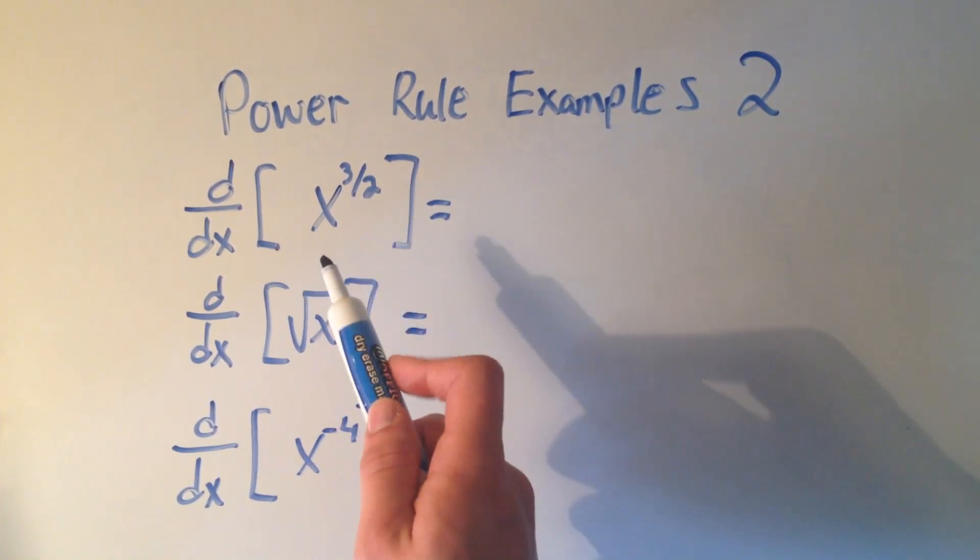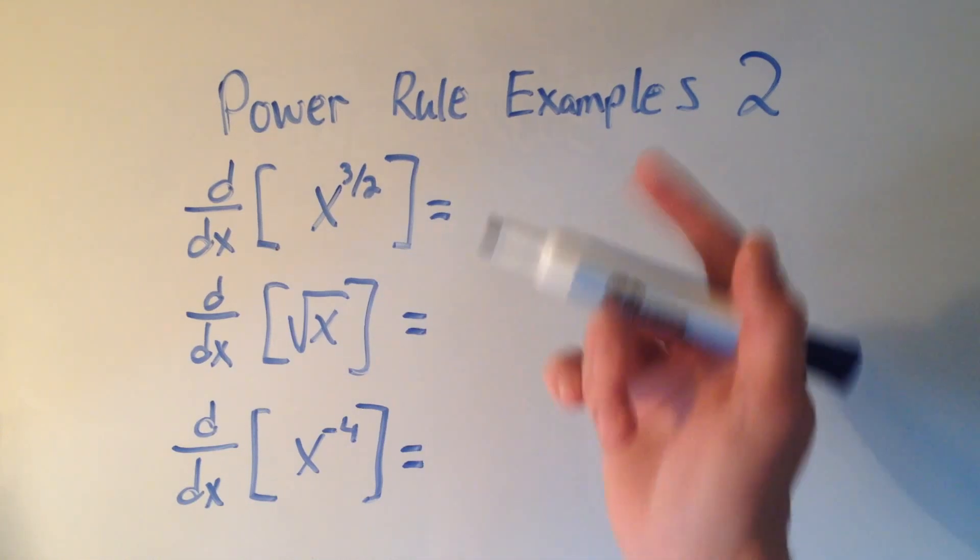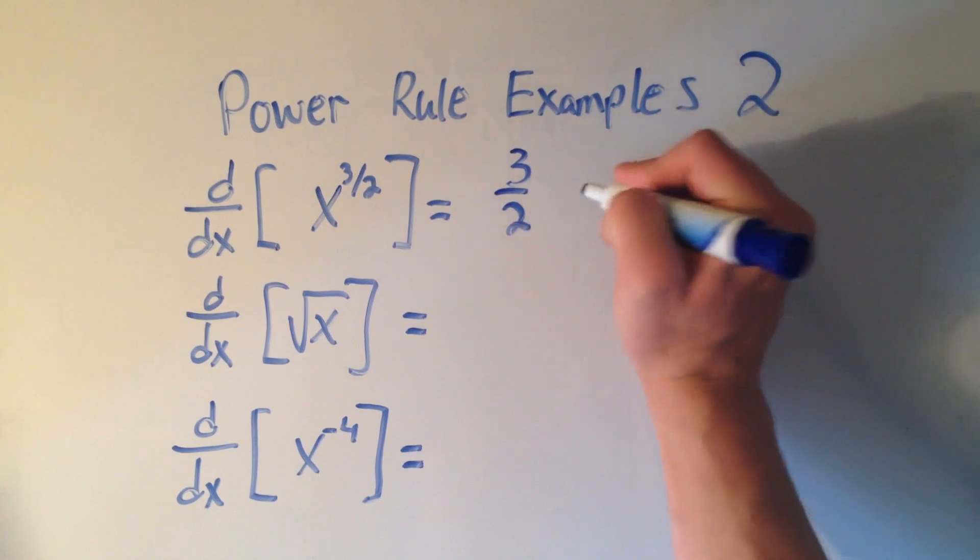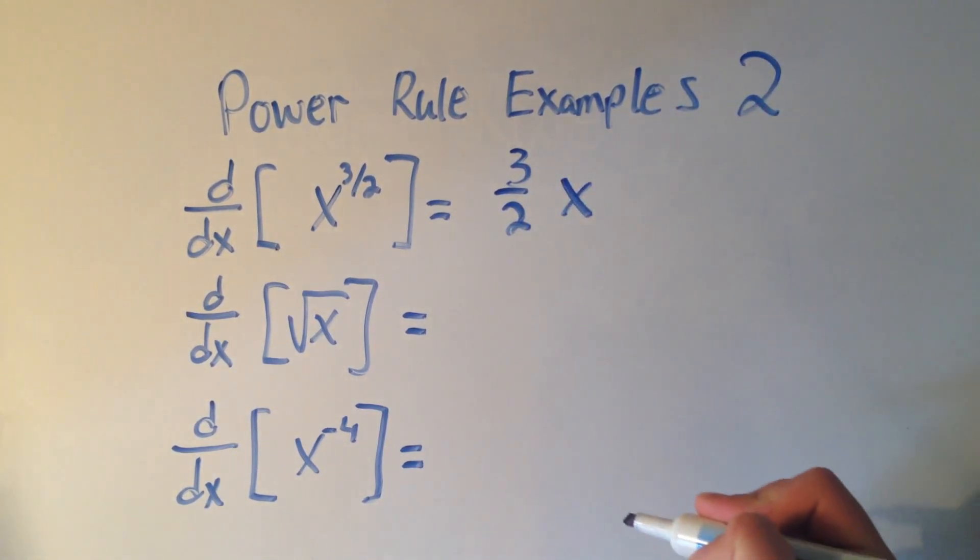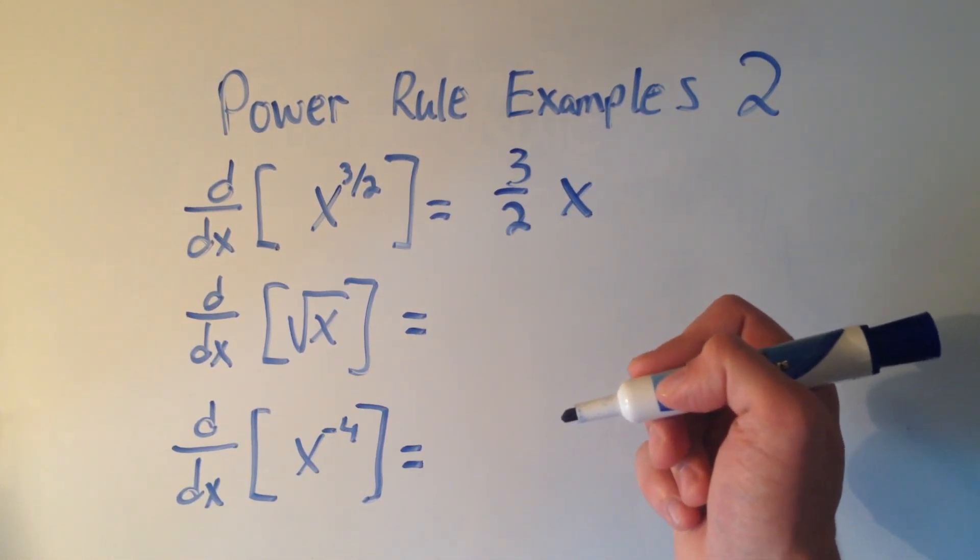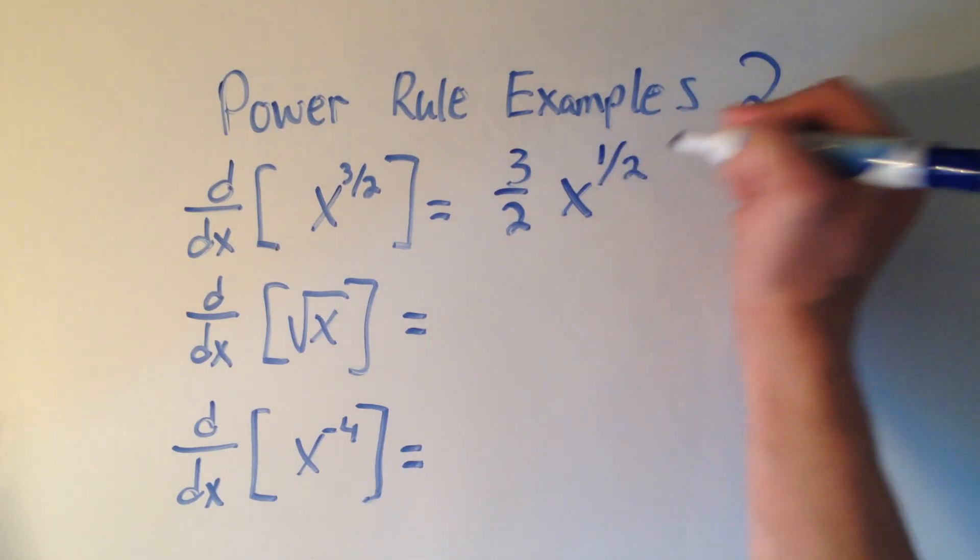So if I want to take the derivative of x to the 3 halves power using the power rule, I multiply by the exponent, in this case I'm multiplying by 3 halves, and then I'm subtracting 1 from the exponent. So 3 halves minus 1, that's minus 2 halves, or x to the 1 half power.